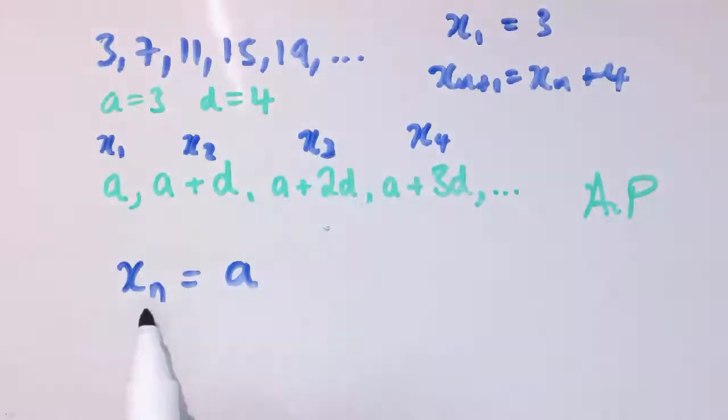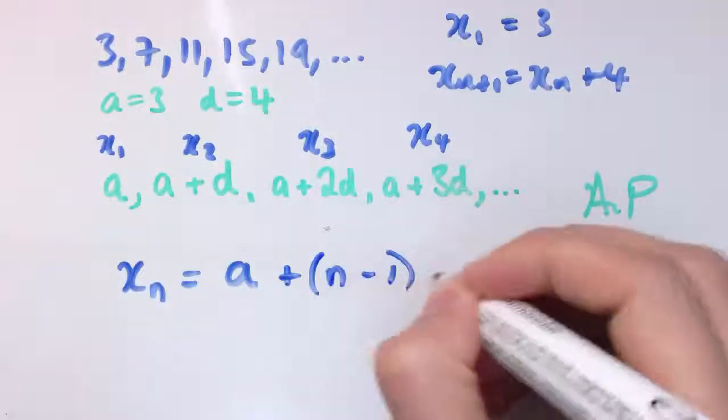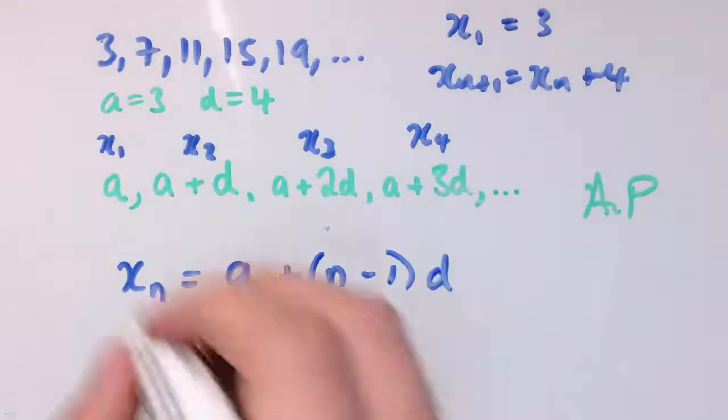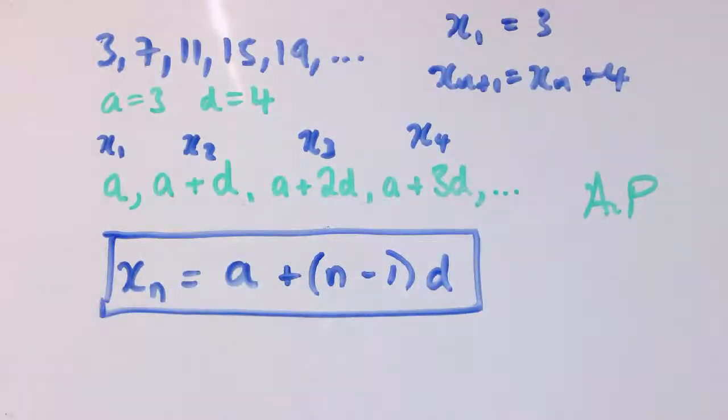So the number of d's that I add on is almost always one less than the term number n. So I need to add on n minus 1 times d. And that is our general form for an arithmetic progression.